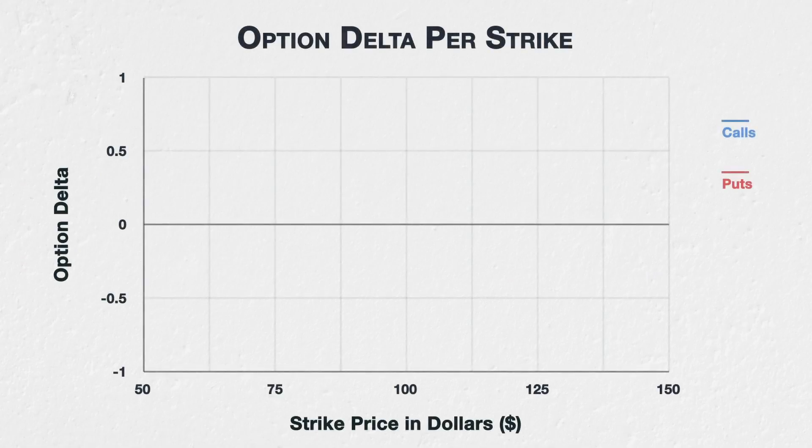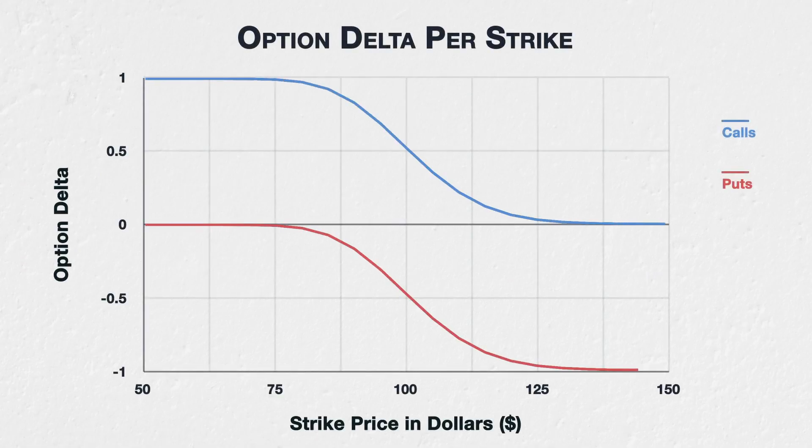We mentioned in the previous lecture that option deltas vary. One variable that has a major influence on delta is the underlying asset price, and where it currently is relative to the strike price of each option. To understand how the underlying price affects option deltas, let's take a look at multiple options that share the same underlying asset price, days to expiry, and implied volatility. The only difference between these options is the strike price, and therefore where they sit relative to the underlying asset price.